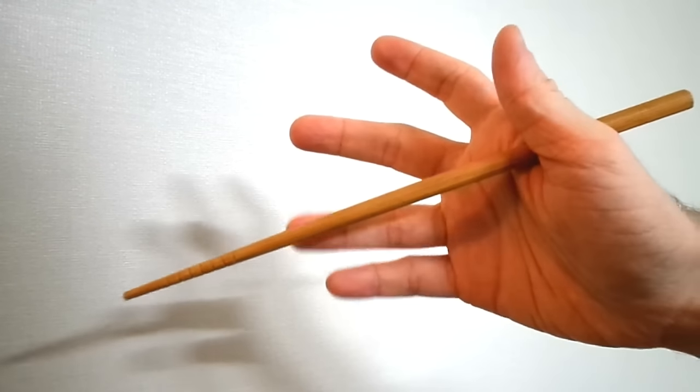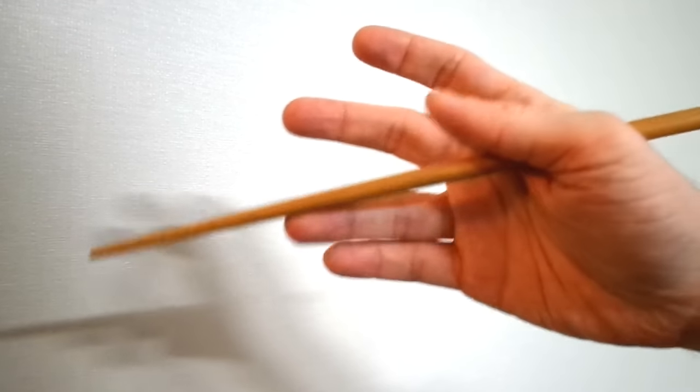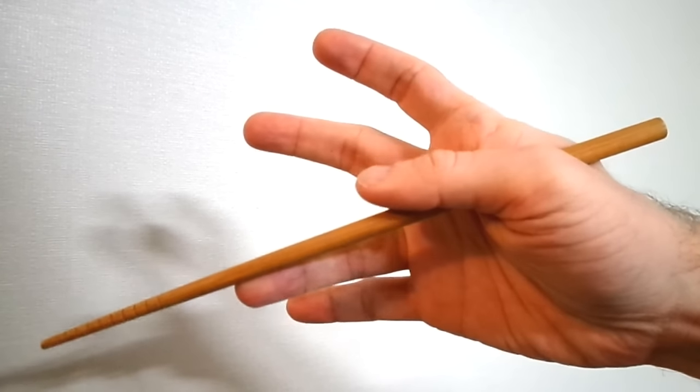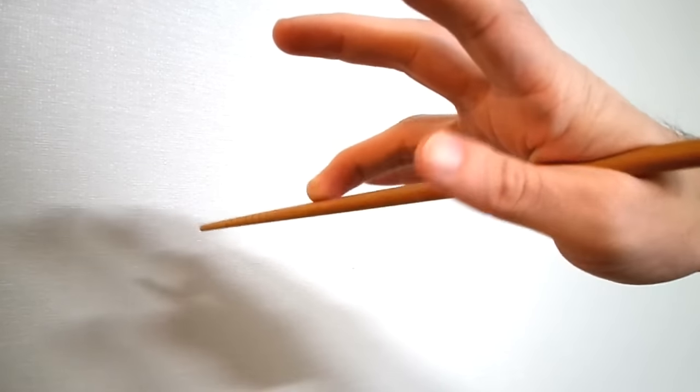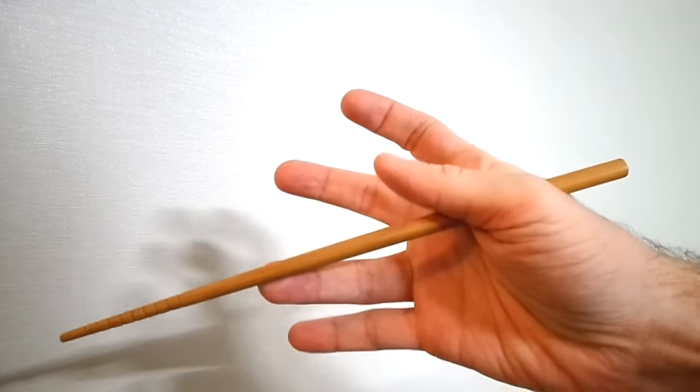Now apply pressure with the tip of your ring finger. This will lock the chopstick in place. Remember, this chopstick will not move, only the top one will, so you need to practice to keep it in a nice and steady grip.